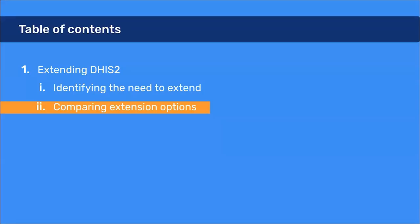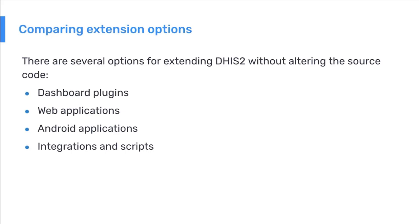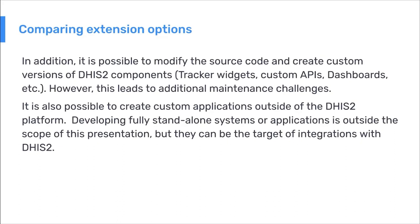Next, we'll talk about the various extension options available and compare when and how to choose between them. There are several options for extending DHIS-2 without altering the source code: dashboard plugins, web applications, Android applications, as well as integrations and scripts. It is also possible to modify the source code and create custom versions of DHIS-2 components such as tracker widgets, custom APIs, and dashboards — however, this leads to significant additional maintenance challenges. It's also possible to create custom applications outside of the DHIS-2 platform, which can be the target of integrations.